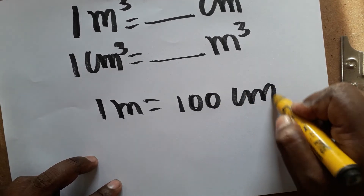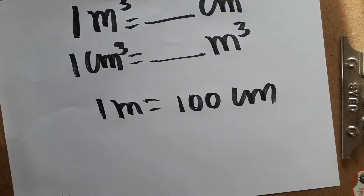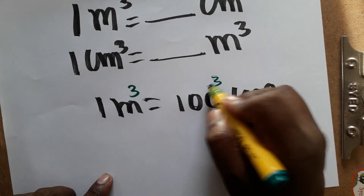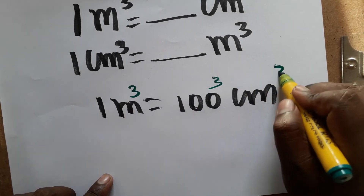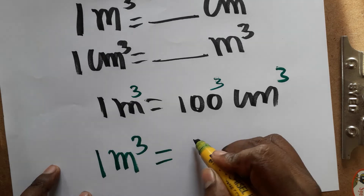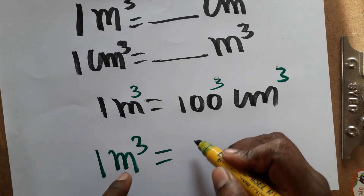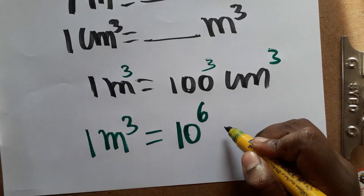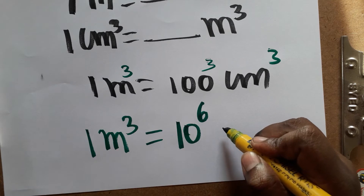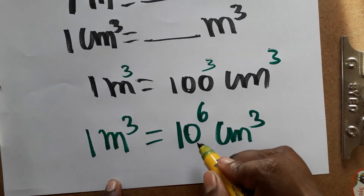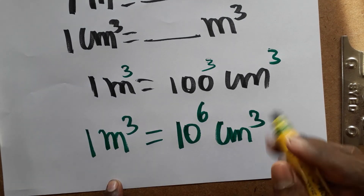Since one meter equals hundred centimeters, one meter cube is equal to hundred cubed centimeter cube. That is 100 into 100 into 100, which gives us 10 power 6 — so one meter cube equals 10 power 6 centimeter cube.